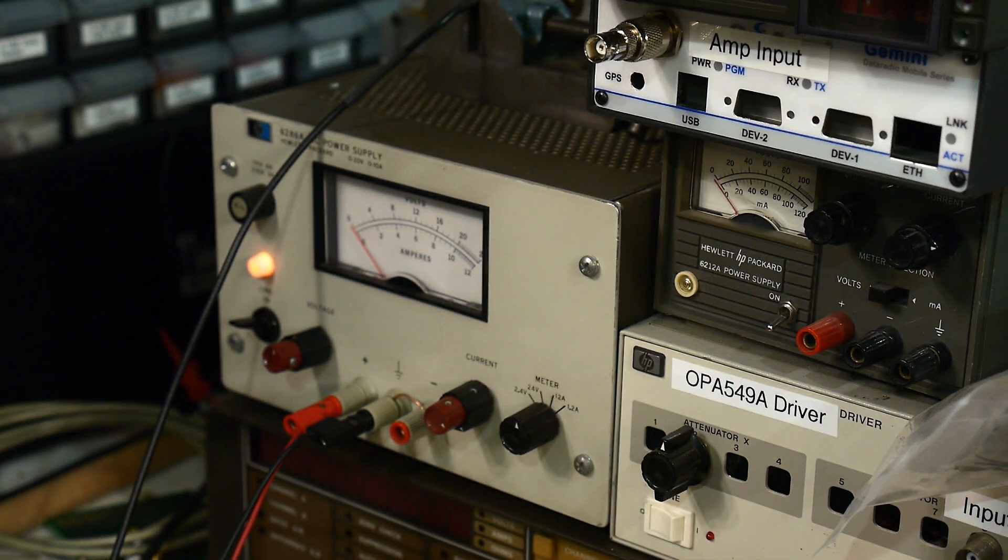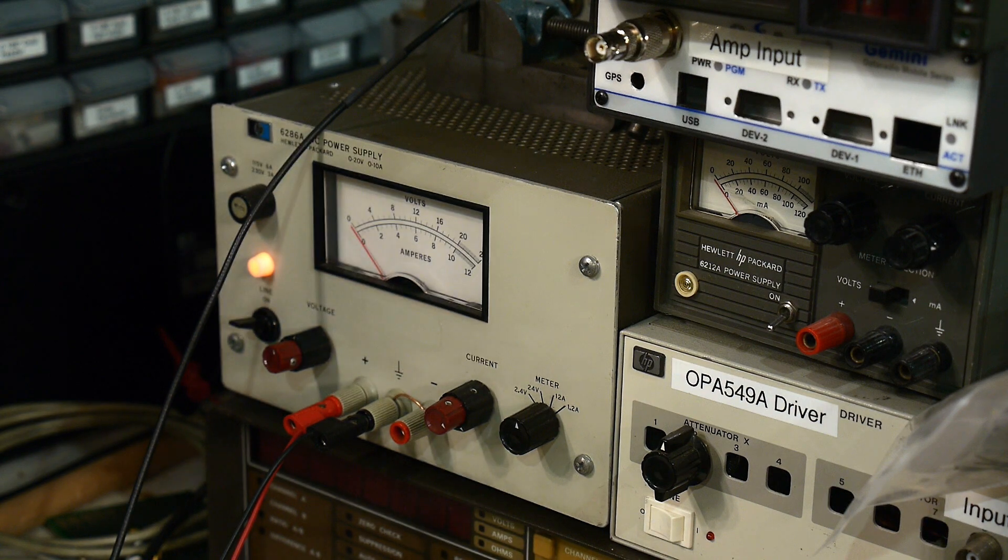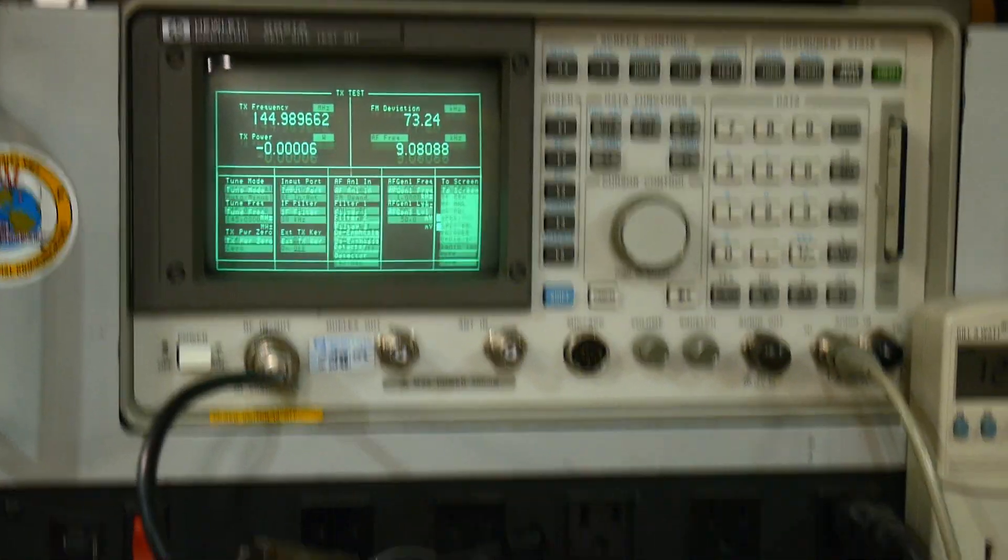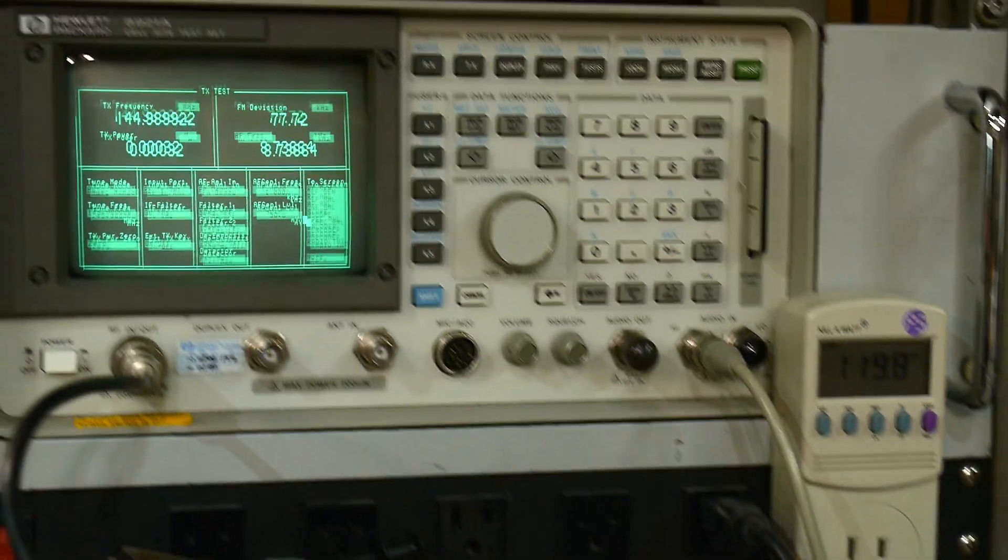And then we can check this over here. You can barely see that, but we can watch the current draw. Current goes up to about 5 amps for the amplifier here. So I say success.